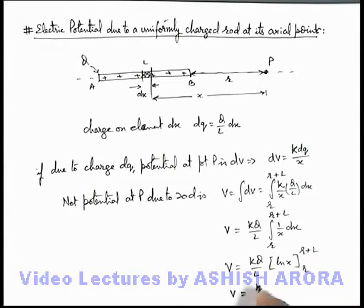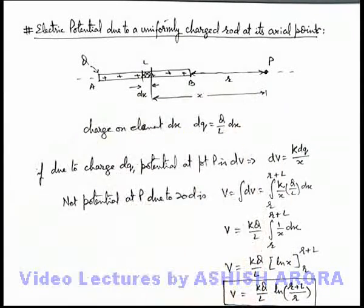The final result we are getting is k q by l, ln of r plus l minus ln of r. This can be written as ln of r plus l by r. So this is the final result for electric potential due to a uniformly charged rod at an axial point located at a distance r from one end of the rod.